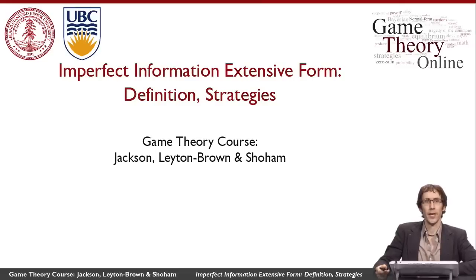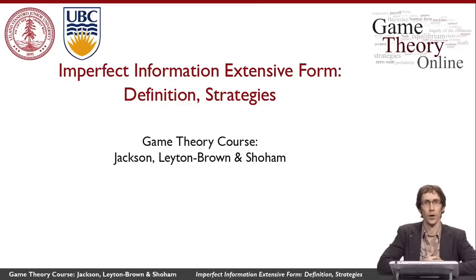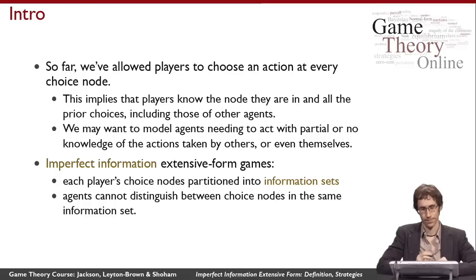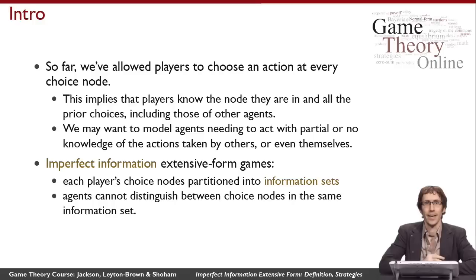In this video, I'm going to tell you about how to formally define the imperfect information extensive form and how to reason about strategies in these games. In the perfect information extensive form, we have a player taking action at every single choice node in the game. A consequence of that definition is that players know what node they're in at all times, meaning they know the whole history of all the moves that have happened before.